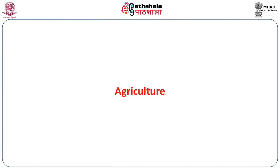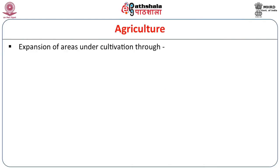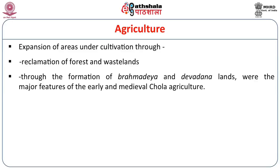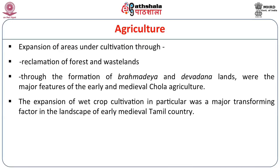In the land holding pattern of the Chola period, Vellan Vahai, Brahmadeya, and Devadana villages all played a vital role in agrarian development. Agricultural expansion occurred through reclamation of forests and wastelands through the formation of Brahmadeya and Devadana lands. The expansion of wet crop cultivation was a major transforming factor in the landscape of early medieval Tamil country.